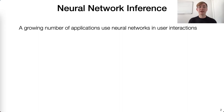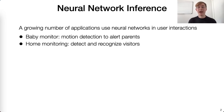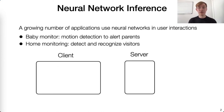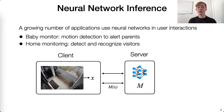A growing number of applications use neural networks in user interactions. For example, baby monitors are used to detect motion in children and alert parents, and home monitoring systems are used to detect and recognize visitors or intruders. Let's see how an inference application works for the home monitoring example. We have a client and a server, and the client device has a feature vector x extracted from a frame of the video camera, while the server has a private neural network model m. They want to interact such that the client learns the prediction m of x to know whether or not someone is at the door.